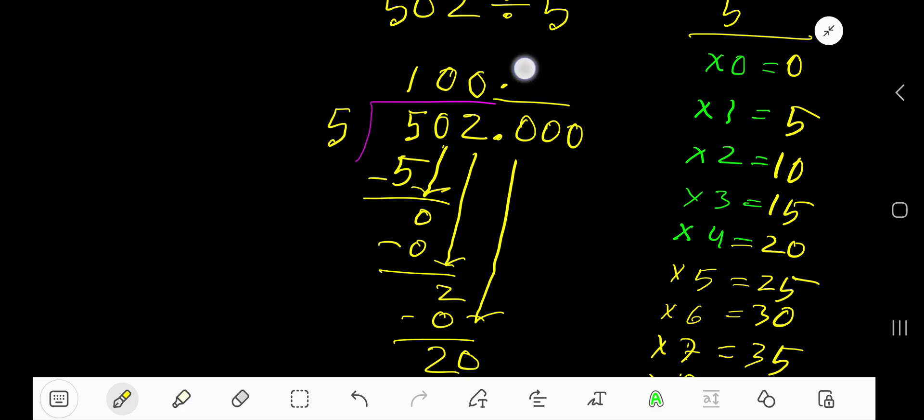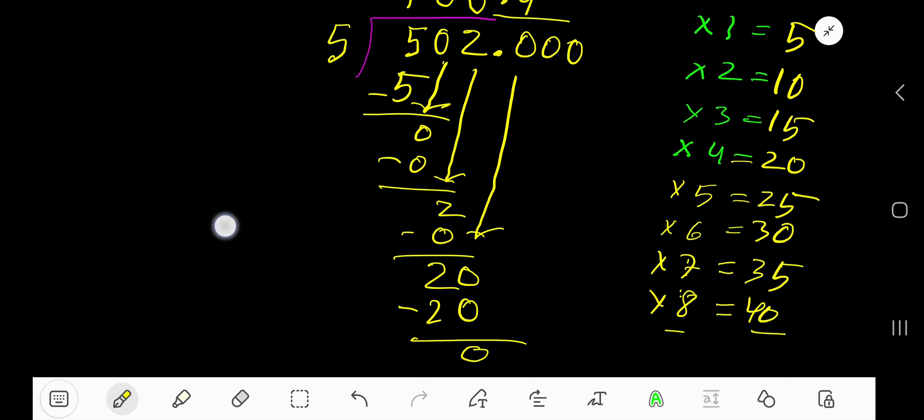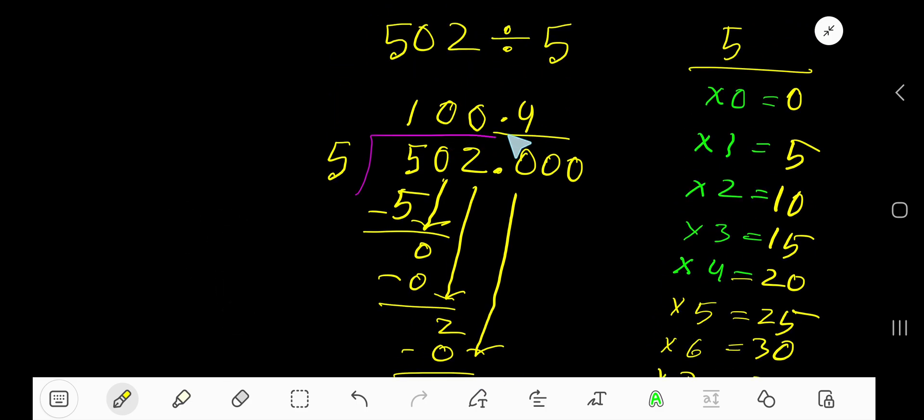5 goes into 20 four times. Write 4. 4 times 5 is 20. If you subtract, you are getting 0. Since your remainder is 0, your answer is 100.4.